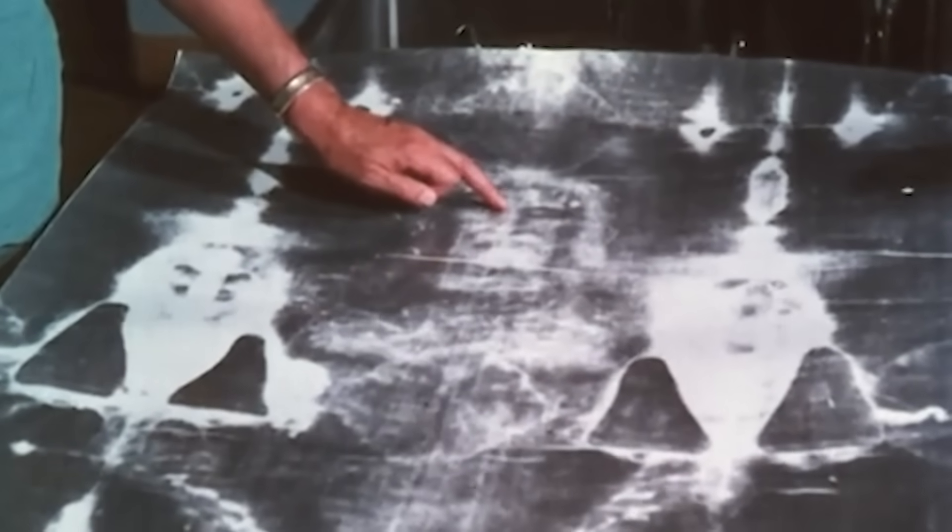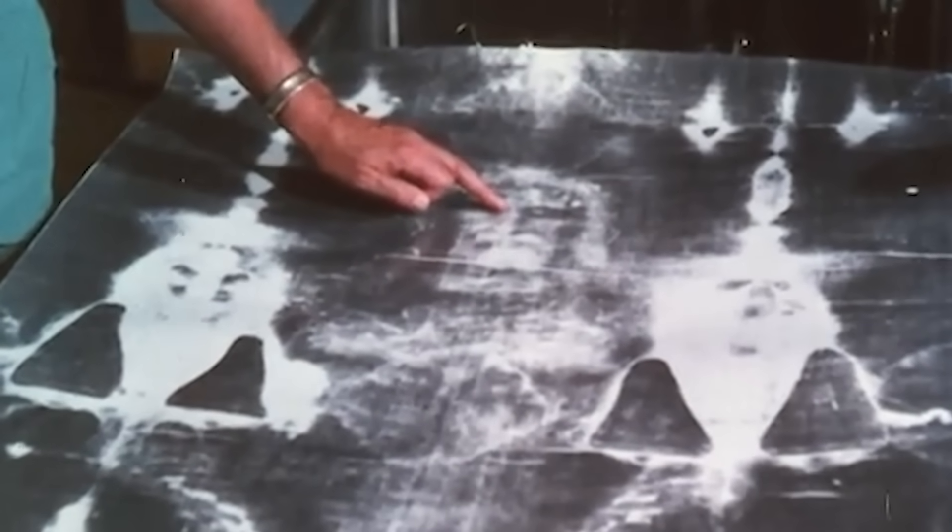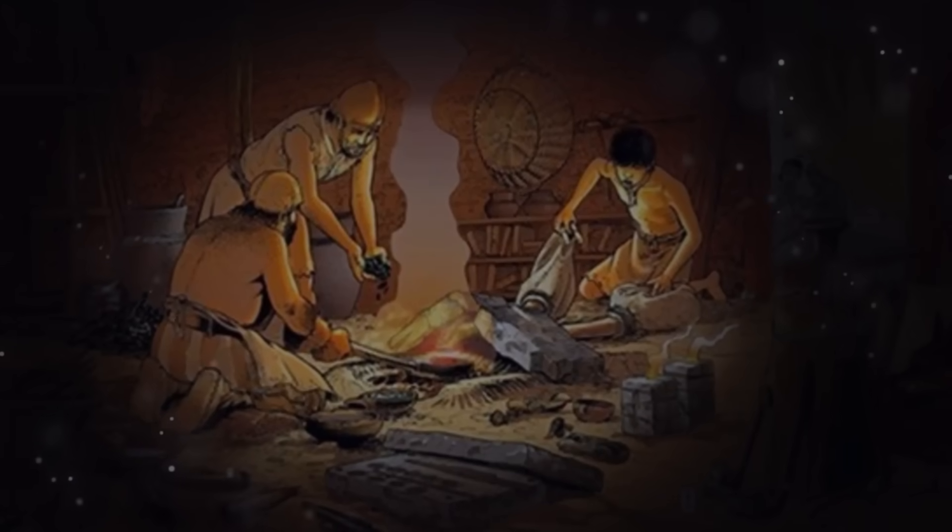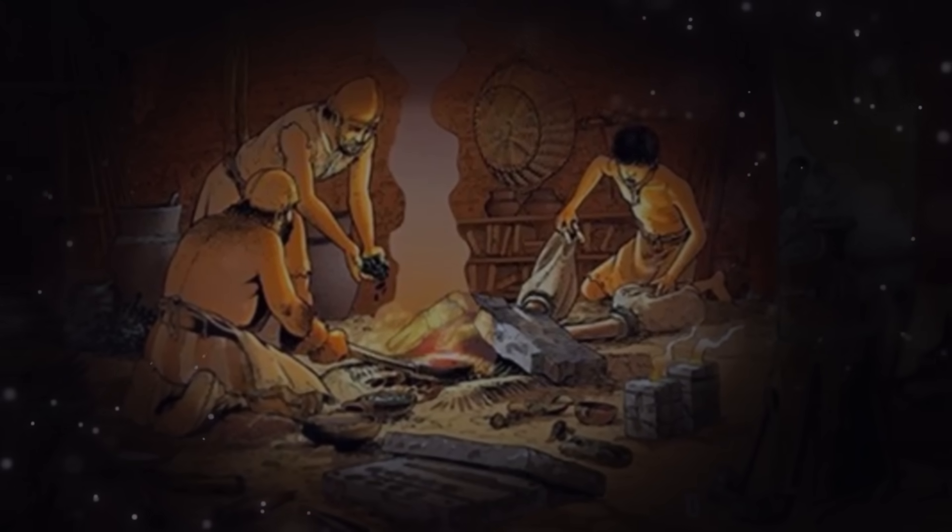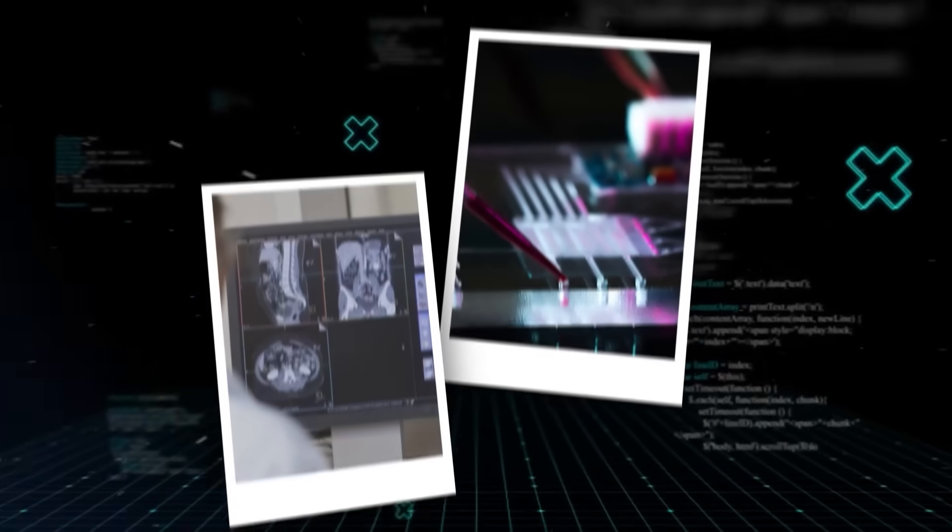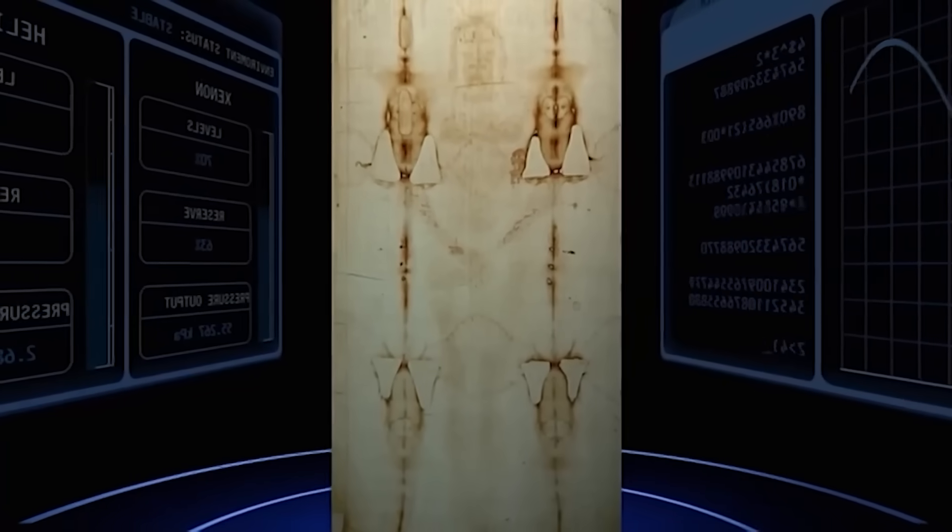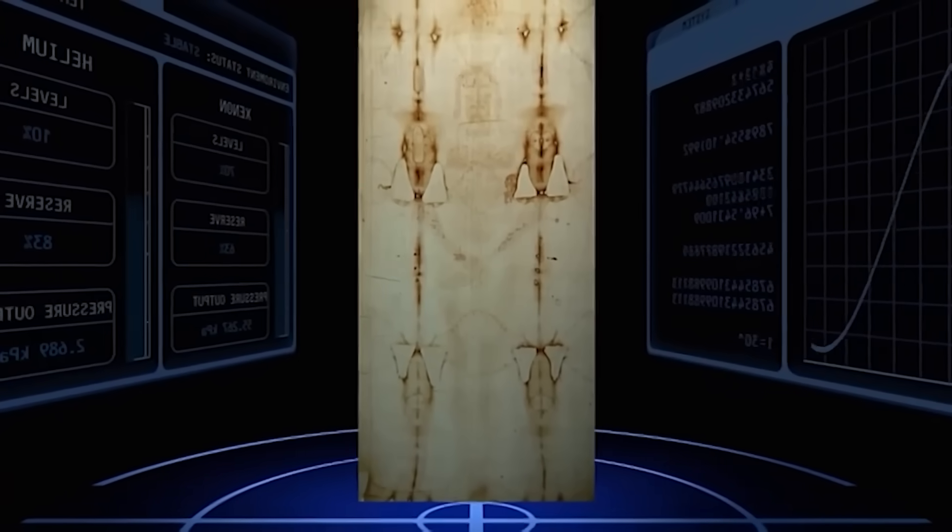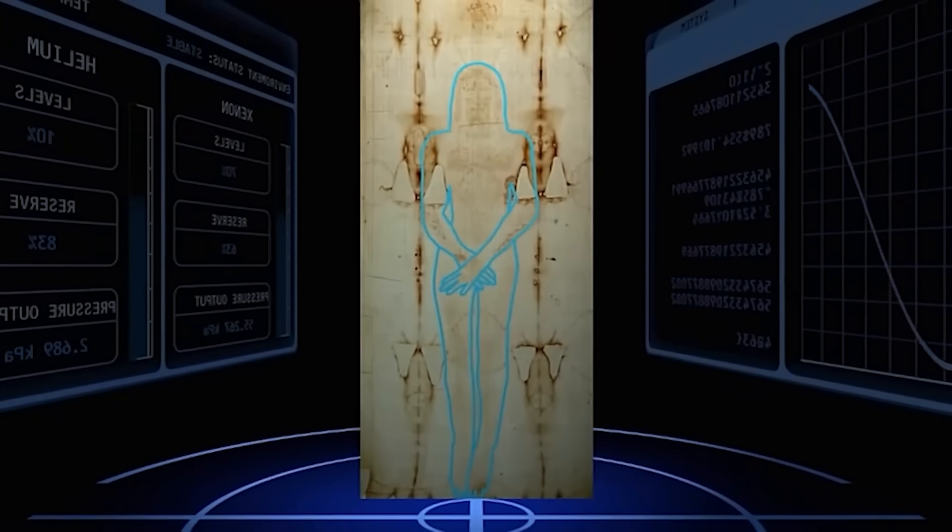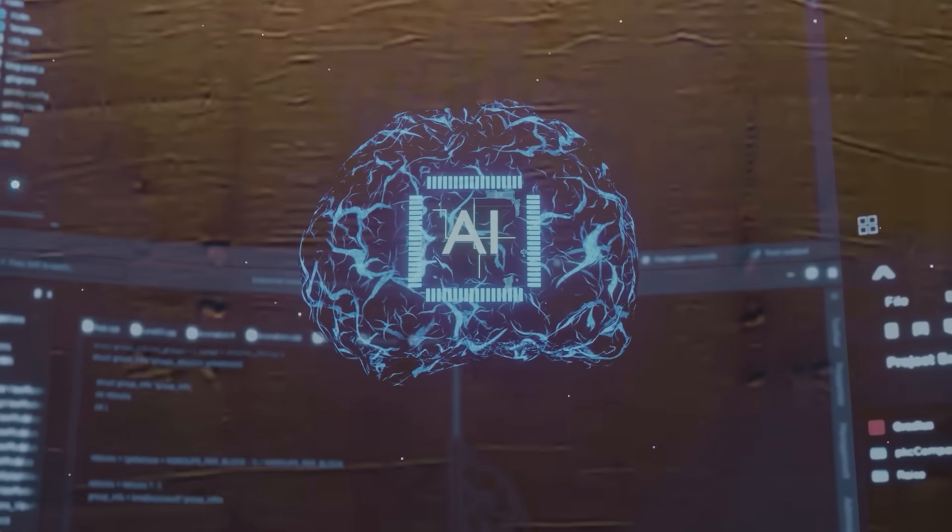So, even if you believe the medieval date is correct, you are left with an even bigger problem. You have to explain how a medieval forger, with no knowledge of photography, digital imaging, or nanotechnology, created a work that contains layers of hidden geometric and three-dimensional data that we can only now detect with artificial intelligence.